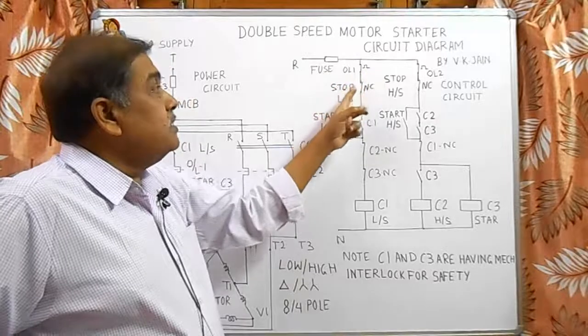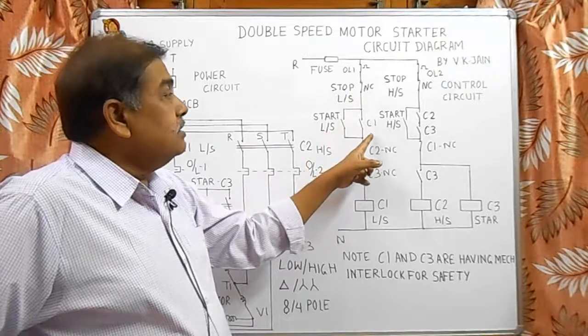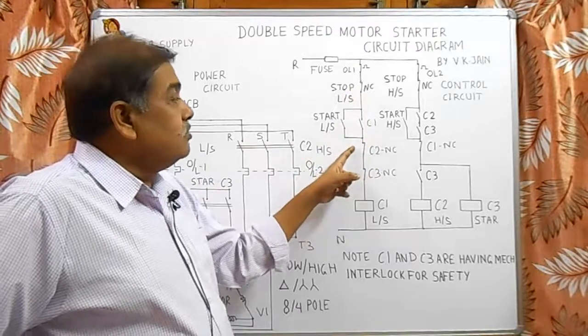Overload 1 is for low speed, it is low speed stop contact, it is start contact, C1 holding contact, C2 NC contact.